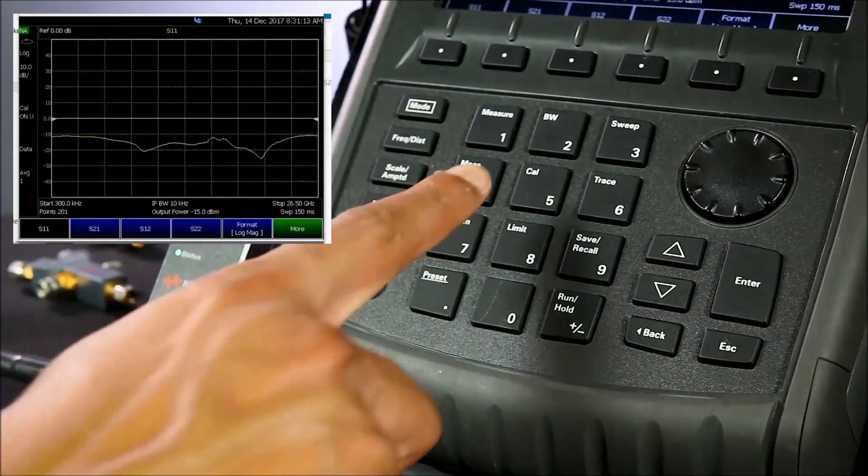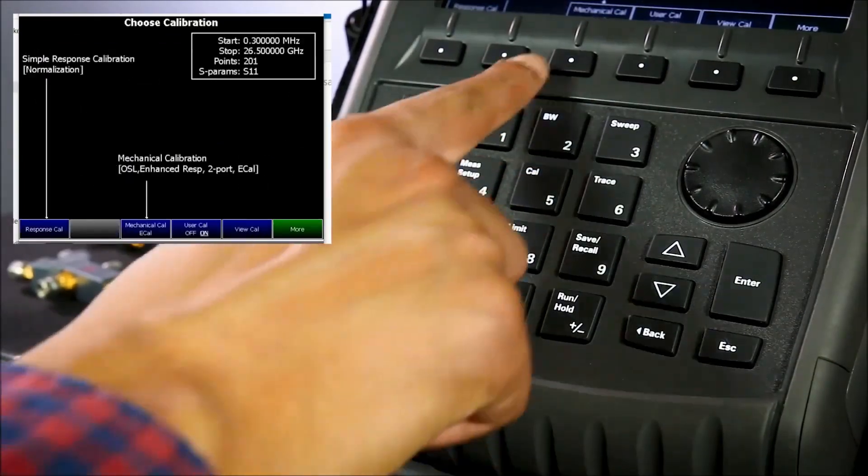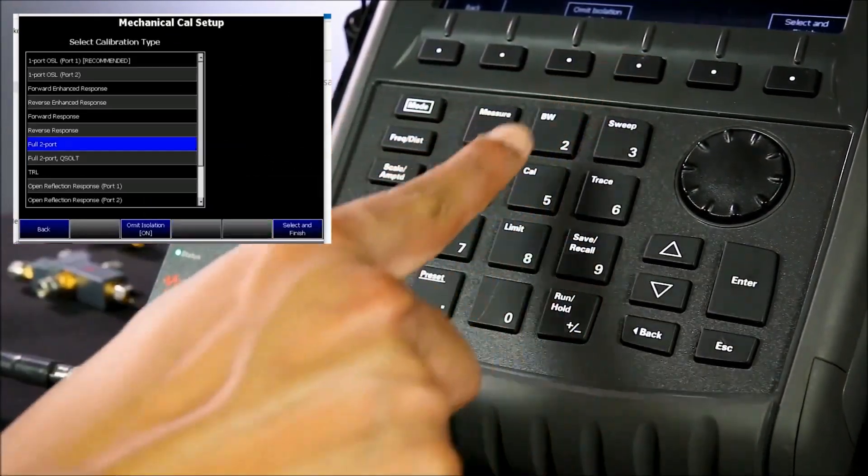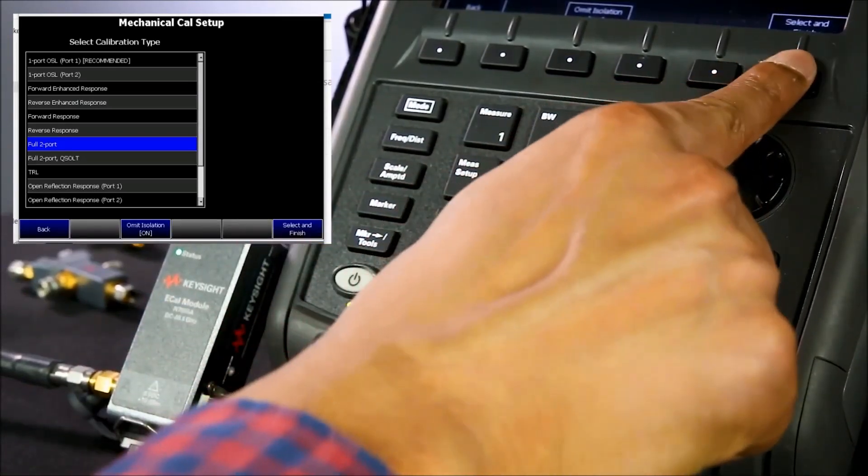Under the FieldFox calibration menu, select the mechanical CAL e-CAL. Under change CAL type, I will select a full two port CAL, and then select and finish.